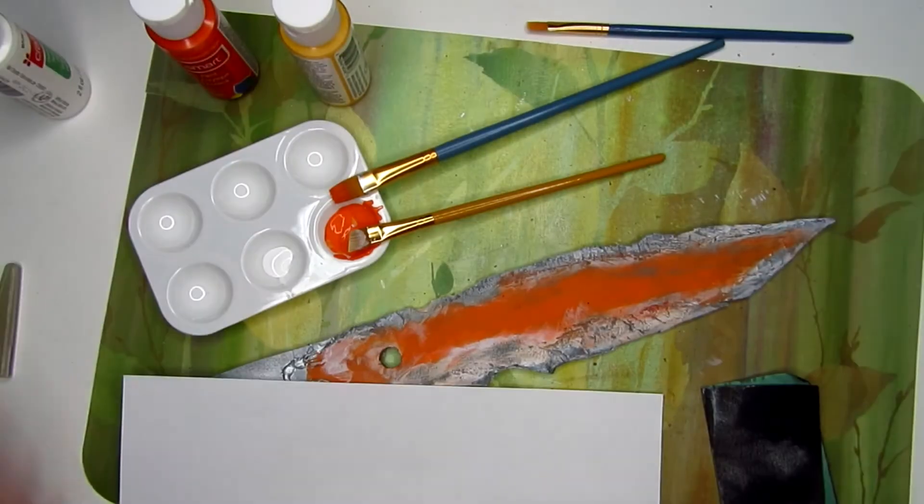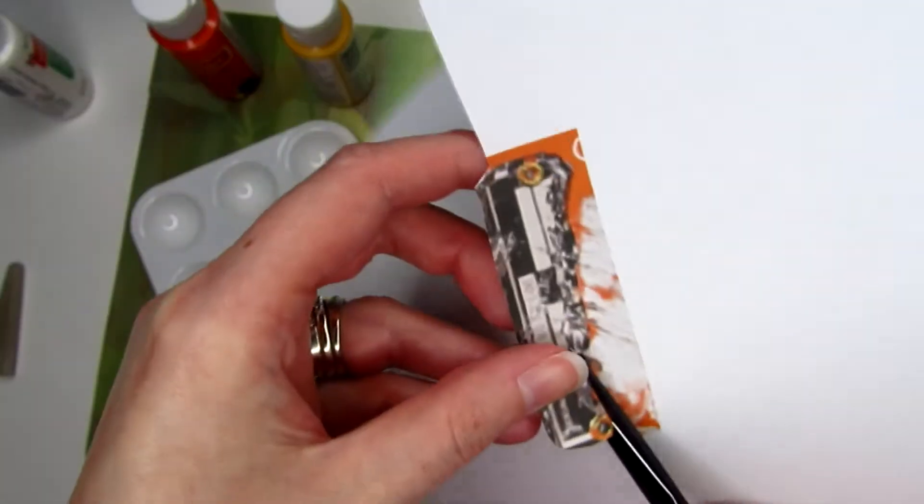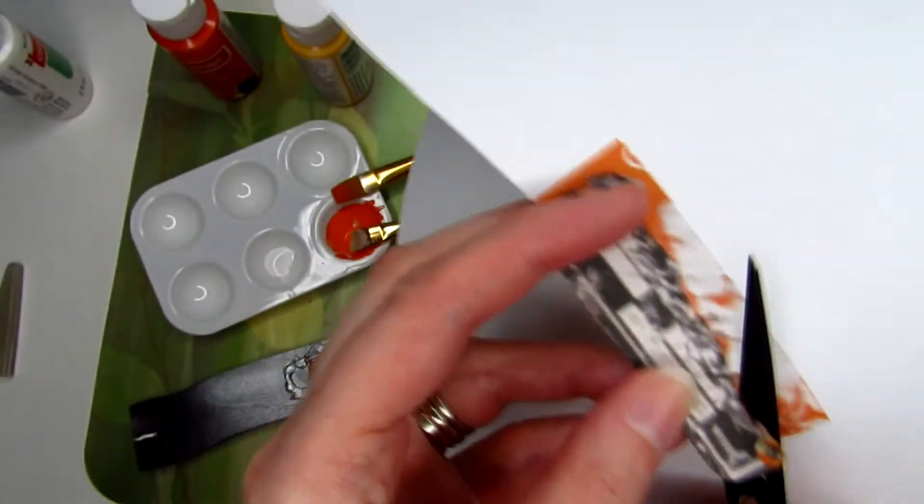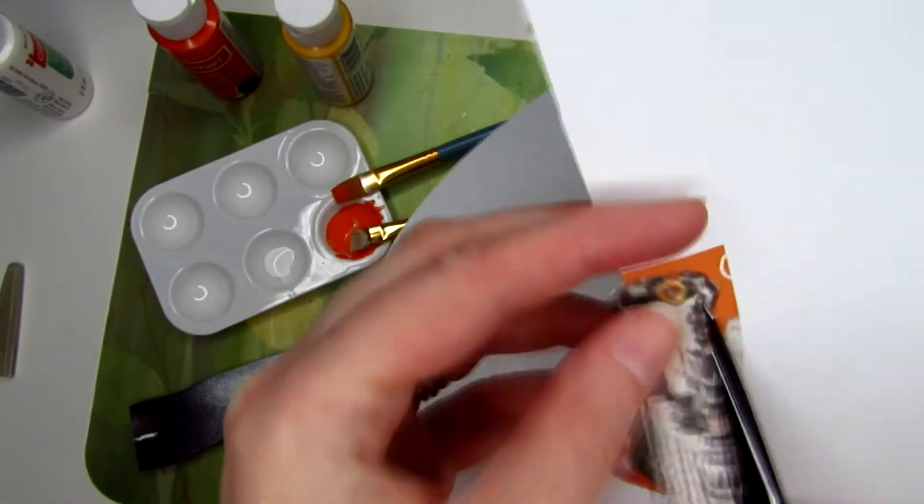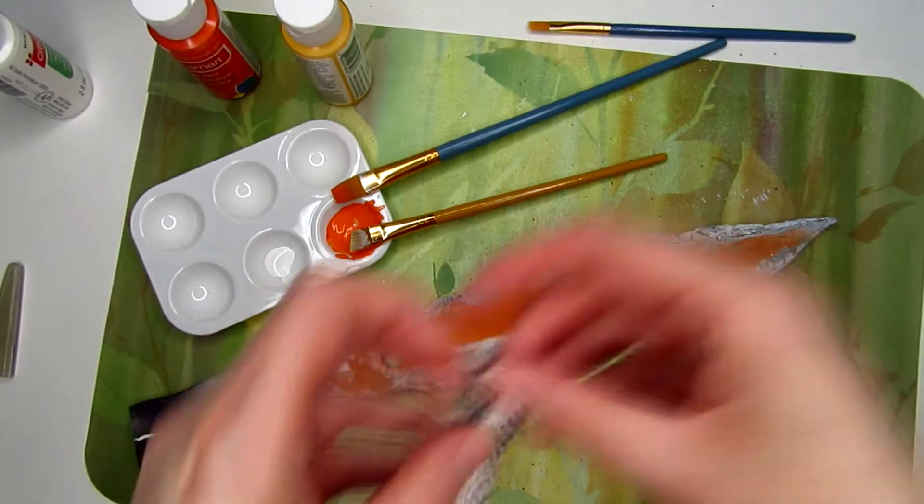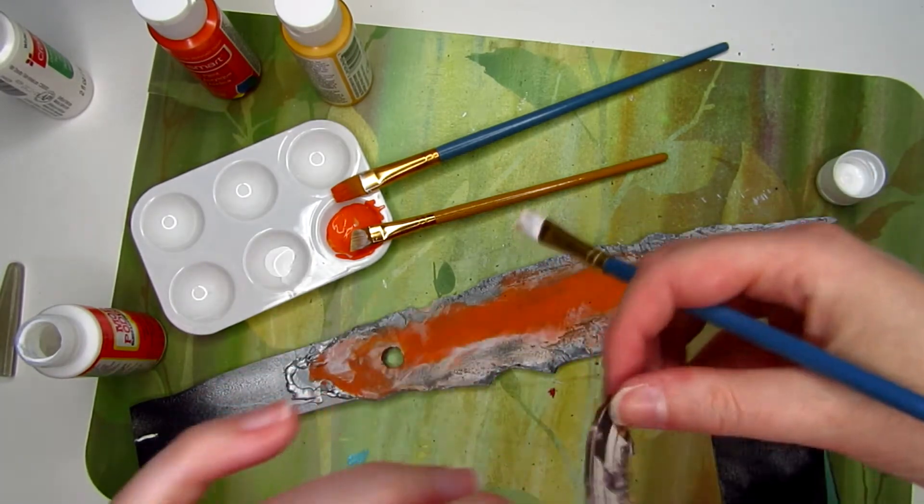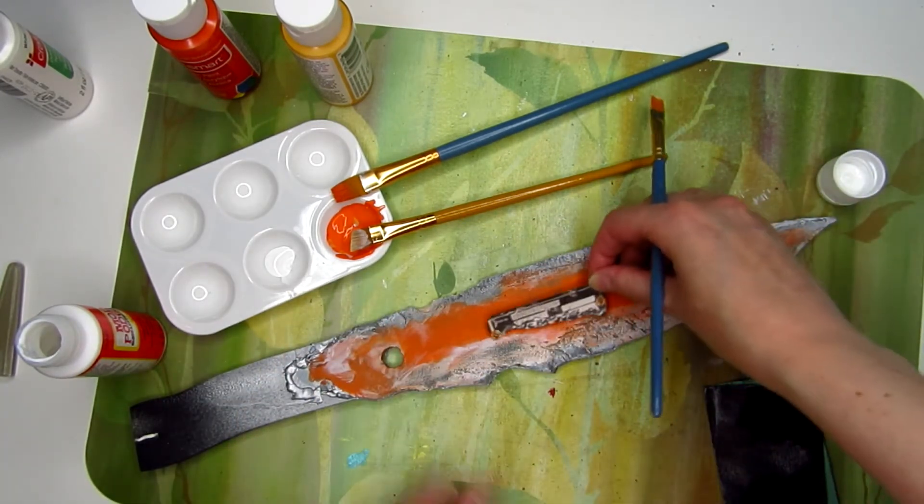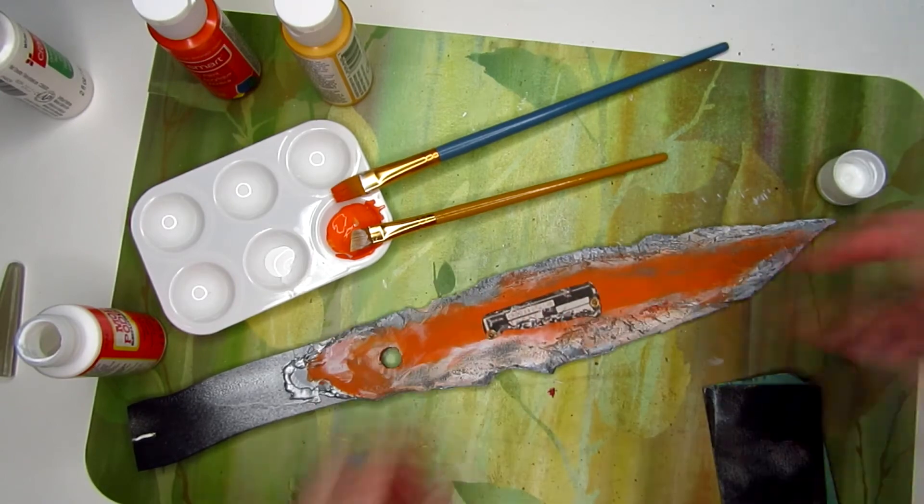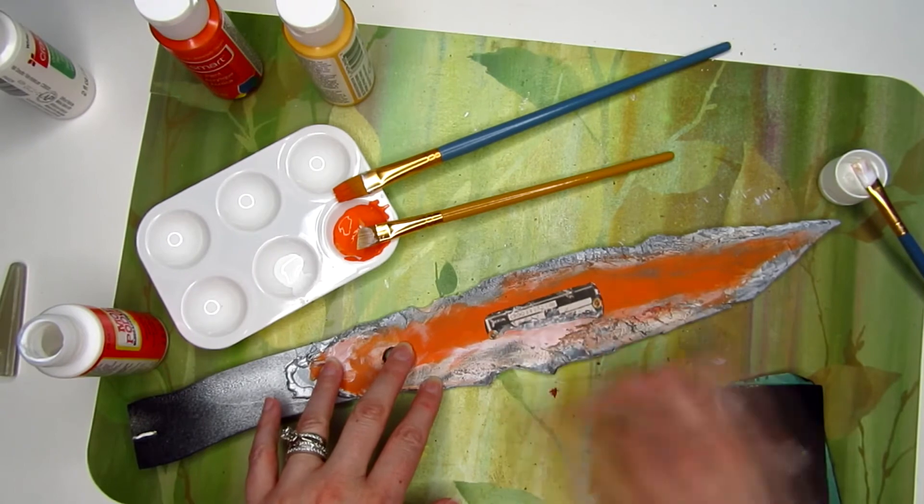For that label looking thing on the metal, I just printed my blade template again in color this time and glued it down with some Mod Podge. Just a little more paint. I coated the entire blade with Mod Podge to seal it.